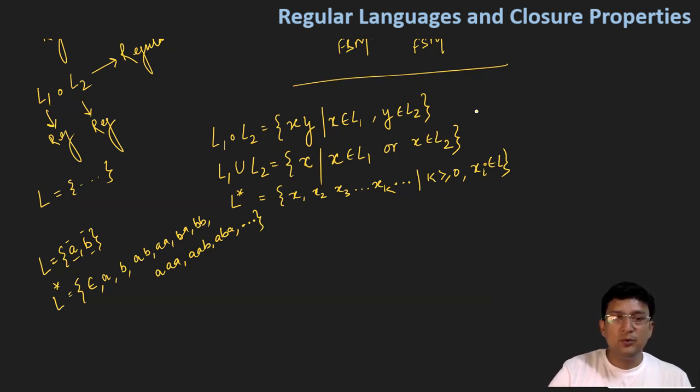For example, if we pick the string aba, then x1 will be part of L, x2 will be part of L, and x3 will also be part of language L.